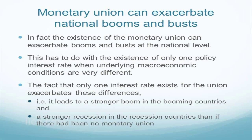We know from the literature on optimal currency areas that the problem of monetary unions is asymmetric developments and asymmetric shocks, and they continued to work unhindered. In fact, the existence of a monetary union may have exacerbated this — because the ECB had to set one interest rate for everybody, it was way too low for Ireland and too high for Germany, exacerbating the boom and later the bust.